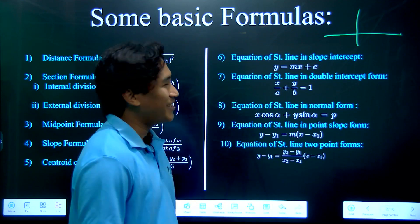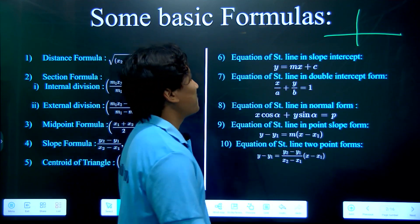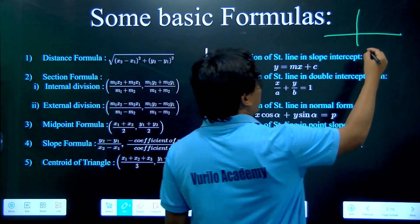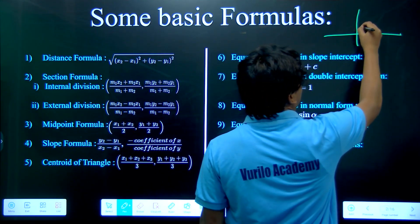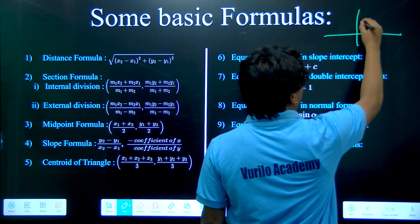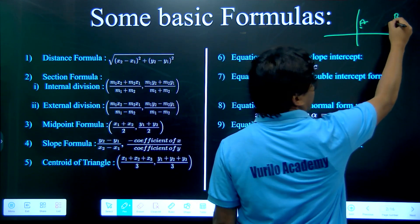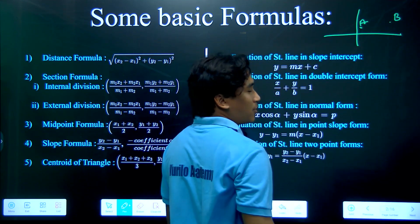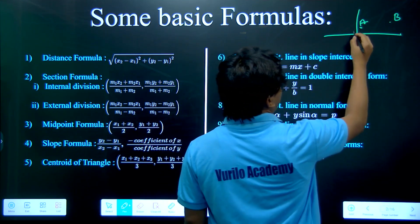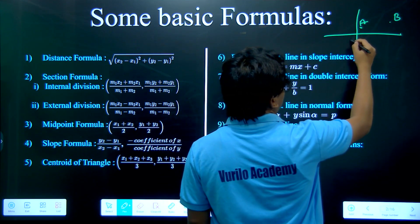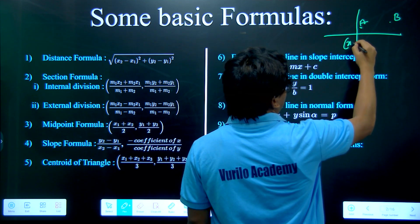We can find point A and point B. Point A has coordinates x1, y1 and point B has coordinates x2, y2.